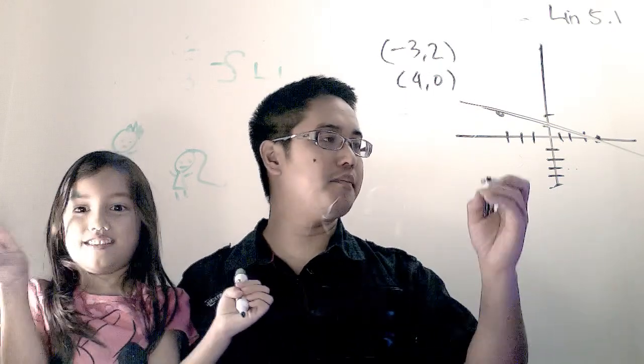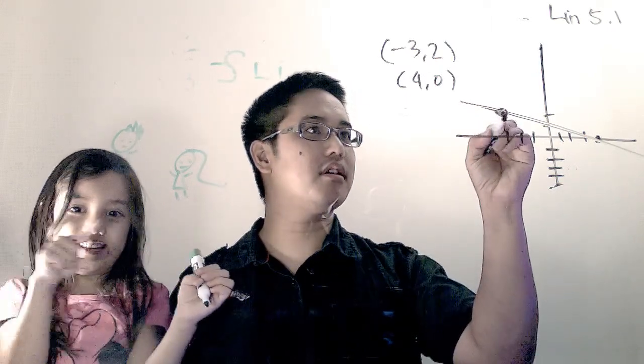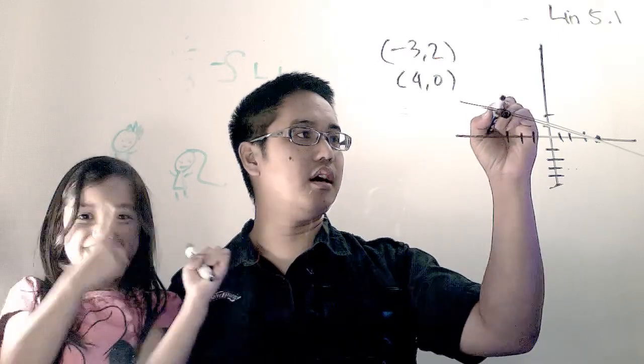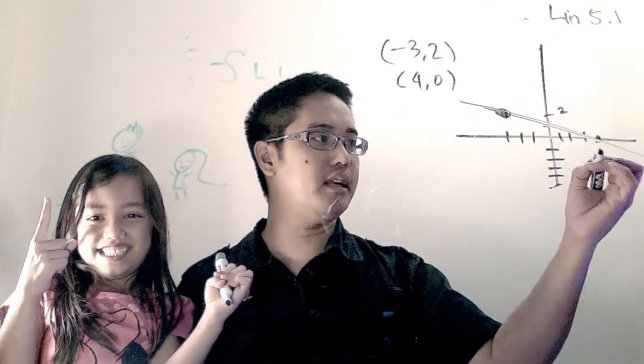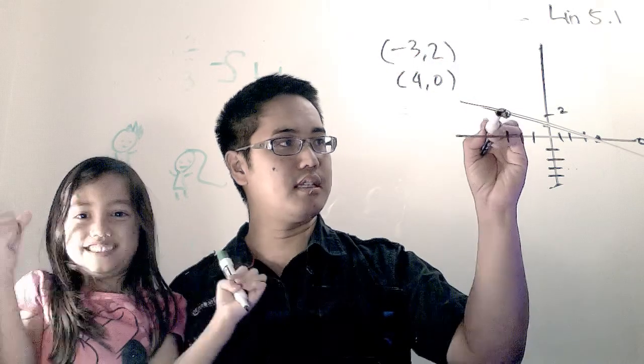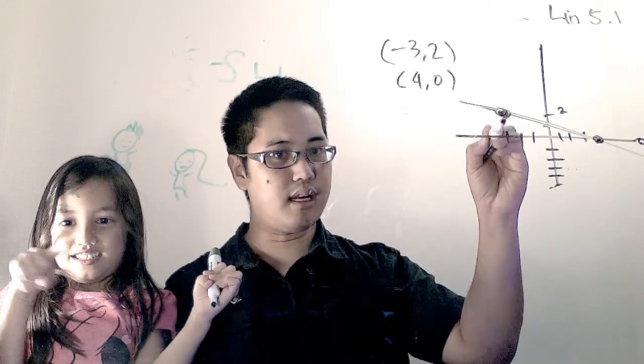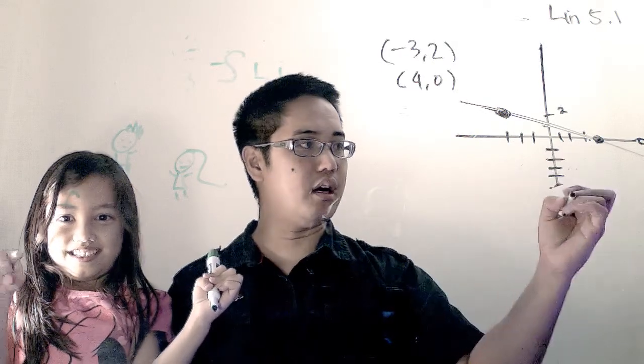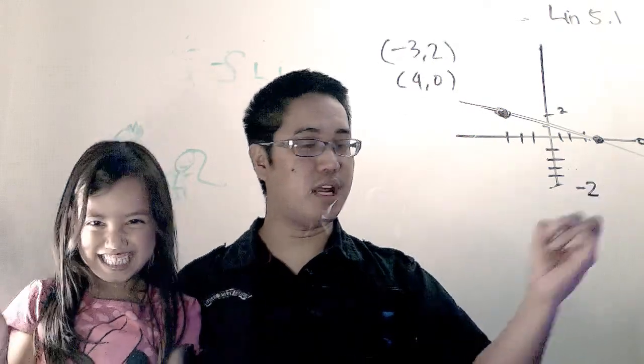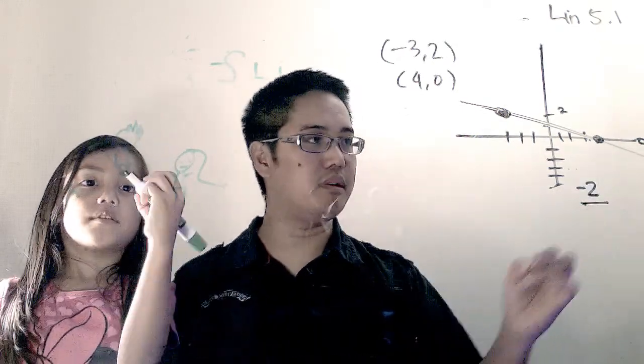You think to yourself, well, if I'm starting over here at two, and I'm ending here at zero, that's the height of this point and height of this point. The difference would be you would have to go down two, so negative two. My rise would be negative two.